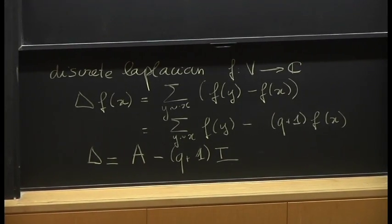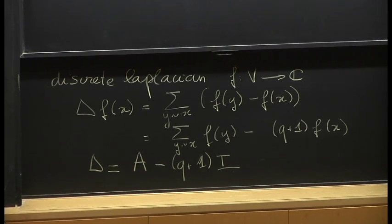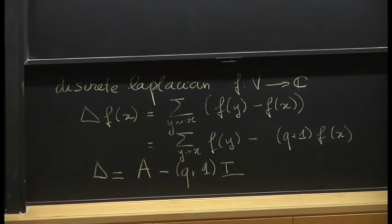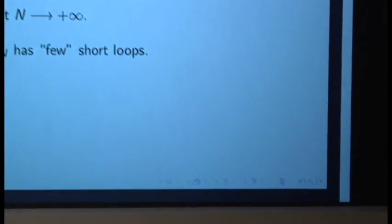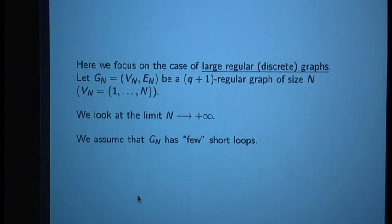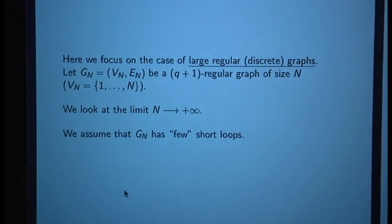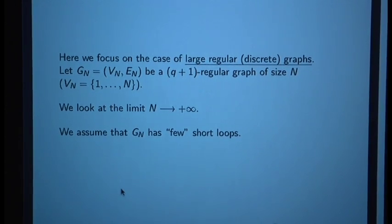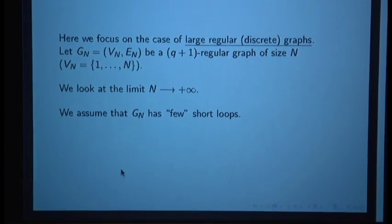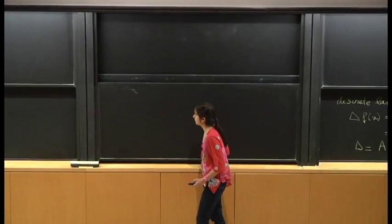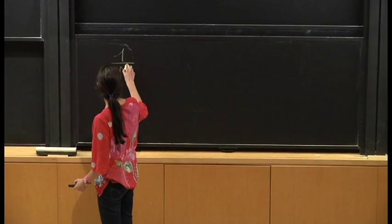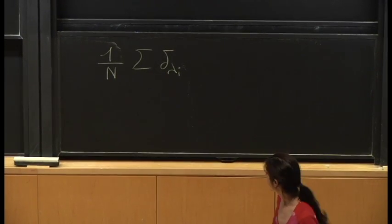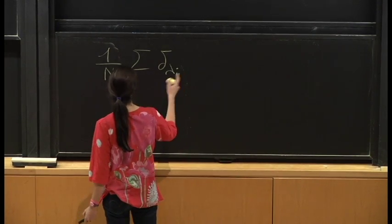We take sequences of graphs of size going to infinity, and we need to make some assumptions about how they go to infinity. The main assumption is that the graph has few short loops — let's say the girth, the length of the shortest loop, goes to infinity, though this can be relaxed a little. We assume that around most points the graph looks like a tree, but we allow a small number of bad points with small loops. This has a consequence on the empirical spectral measure: if I consider the empirical measure putting a delta mass at each eigenvalue λ_i of the adjacency matrix, under the assumption of few short loops, this measure converges to a limit with an explicit density.